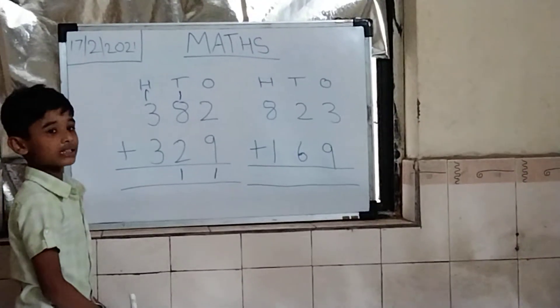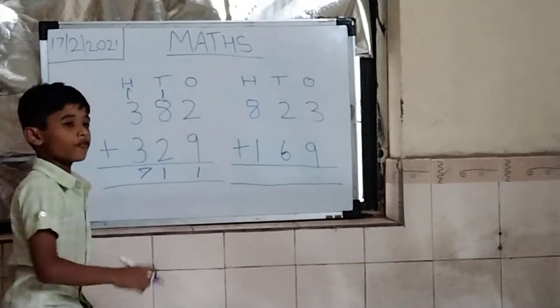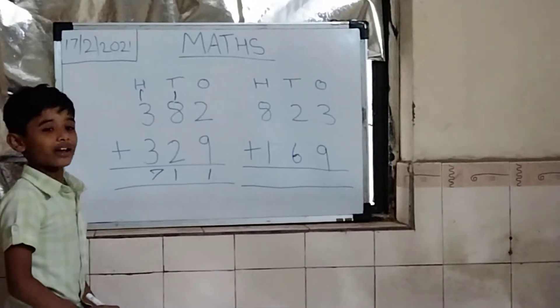3 plus 3 is 6. Then 1 plus is answer is 7. And full answer is 711.